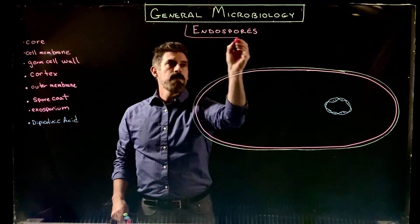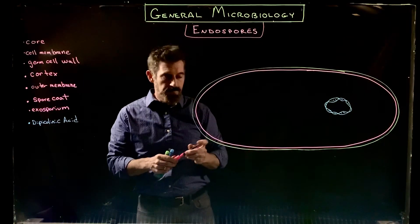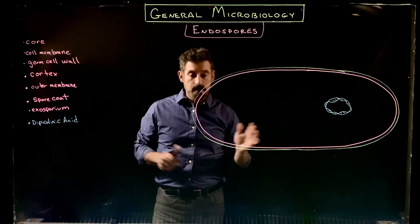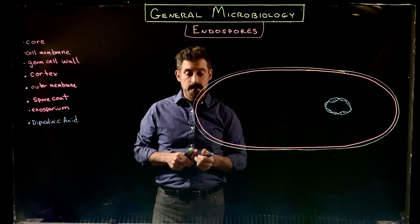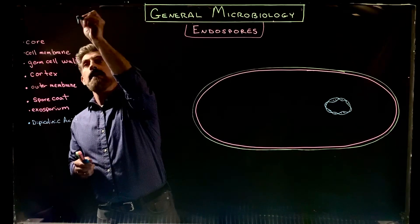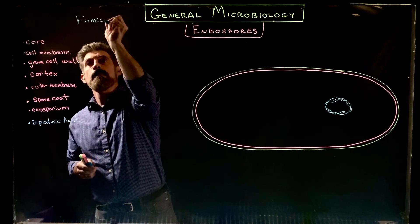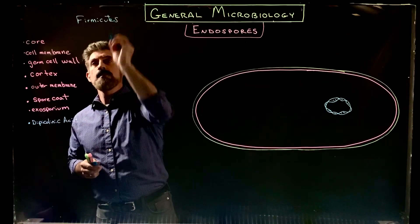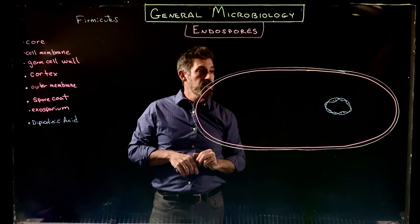Here we're going to look at the formation of endospores. Not all bacteria produce endospores — it's typically gram-positive bacteria of the group Firmicutes, and not all members of this group either. Typically there are a lot of soil bacteria that can do this.